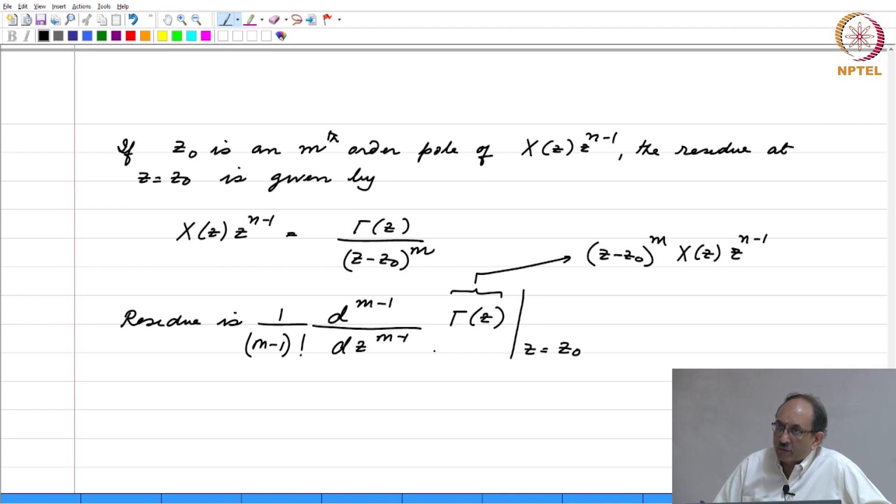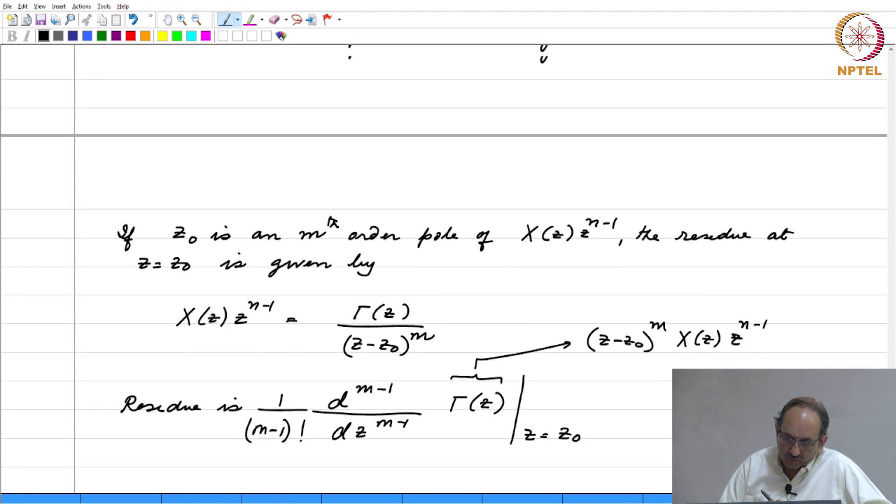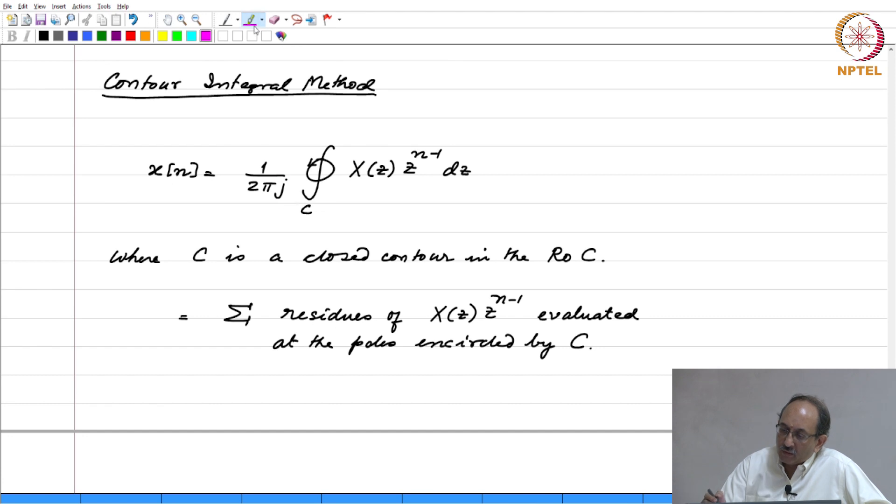So, what we will do is, we will illustrate this for the 1 by (1 minus a z inverse) example, just to illustrate how this works. And then, we will also show that this indeed gives you back x(n).